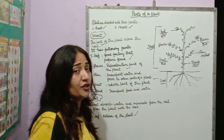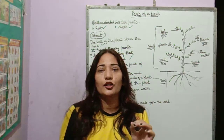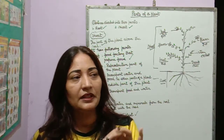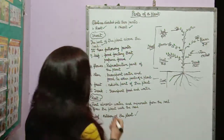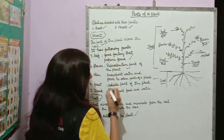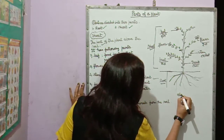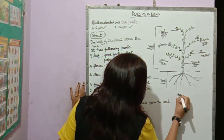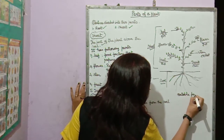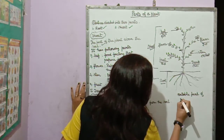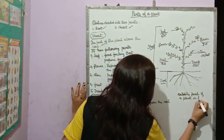Next, fruit. A fruit is the edible part of a plant. Edible means which we can eat. You can also use the word 'eatable.' Eatable part of a plant is fruit.